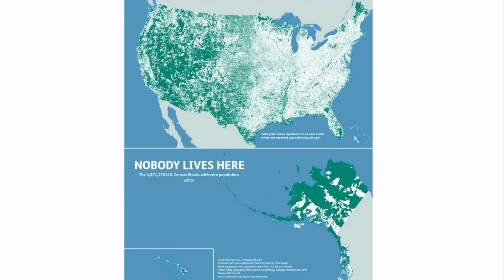The final map is the 'Nobody Lives Here' map — showing the 4,871,270 U.S. census blocks with zero population as of 2020. A census block is a statistical area bounded by visible features like roads, streams, and railroad tracks, and non-visible features like property lines, city boundaries, townships, and school districts. In cities it looks like a city block; in suburban and rural areas the blocks may be larger and more irregular.